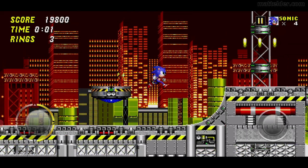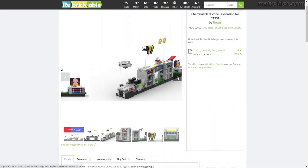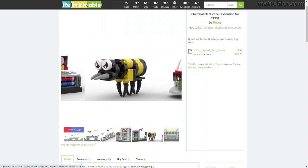After Green Hill Zone, Chemical Plant Zone is arguably the next recognizable level from the early SEGA Sonic the Hedgehog games. This model was designed by Floki and the stud.io file is available for free on rebrickable.com.